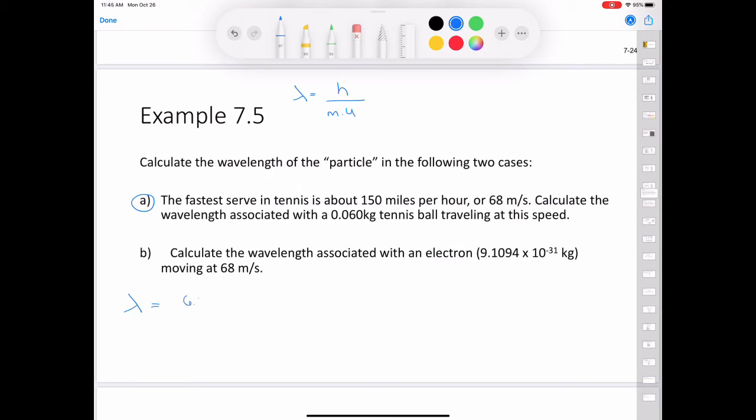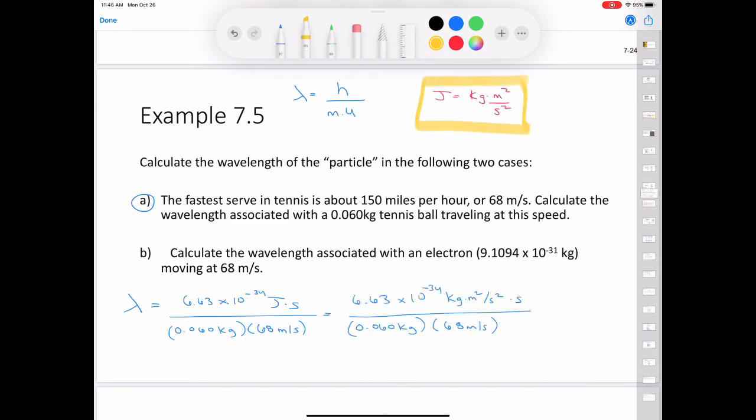We'll plug in some numbers here. So λ is going to be equal to 6.63 times 10^-34 joule seconds divided by the mass in kilograms, 0.060 kilograms, multiplied by the speed, 68 meters per second. Keeping in mind that a joule equals kilogram meter squared per second squared, we can see that units of kilograms cancel, seconds squared cancel, and meters squared cancel to leave us with meters for our wavelength. When we put that into our calculator, we get that our wavelength is equal to 1.6 times 10^-34 meters.